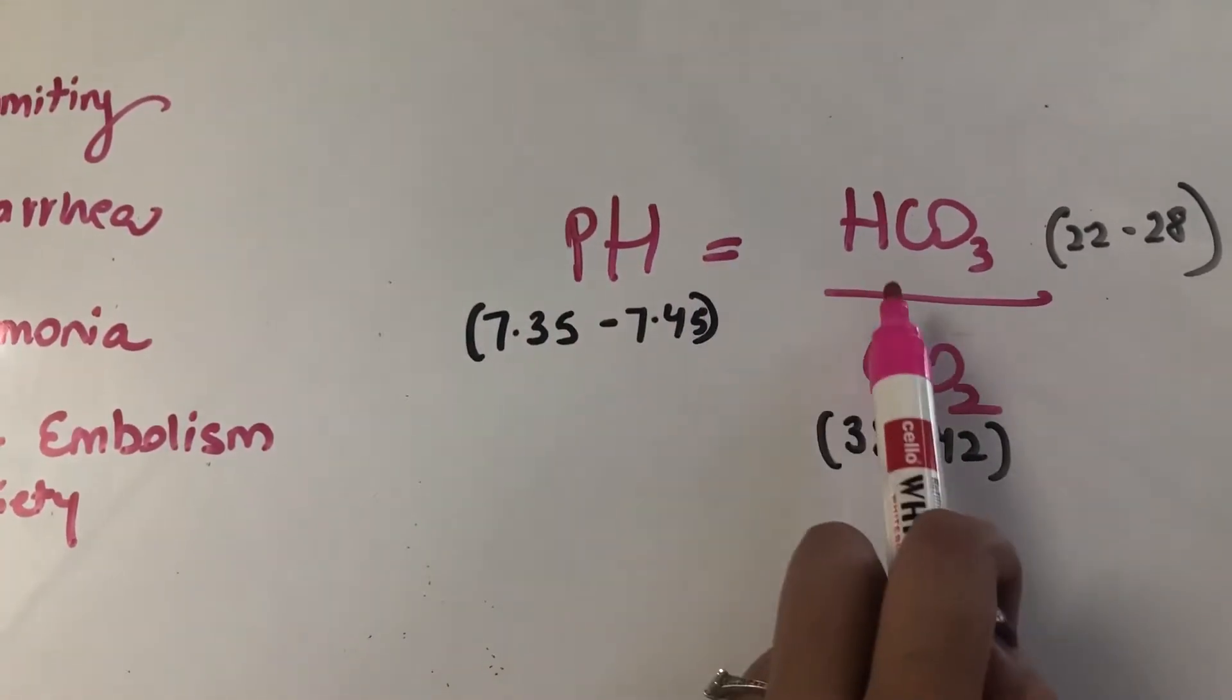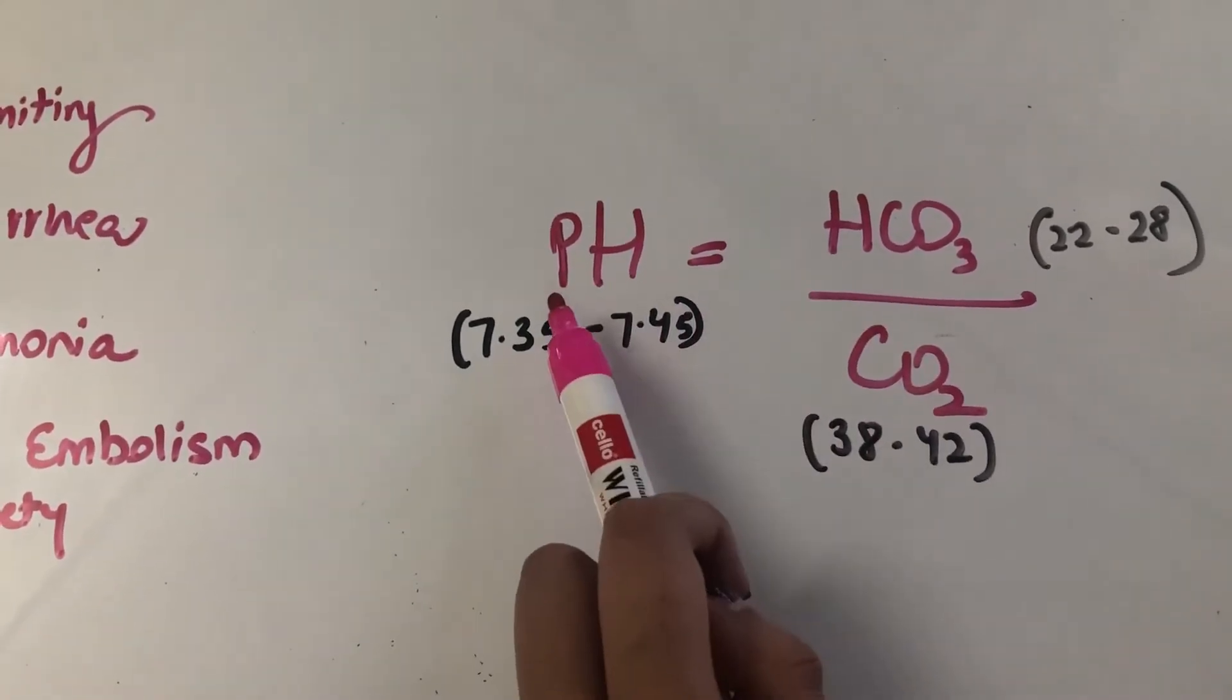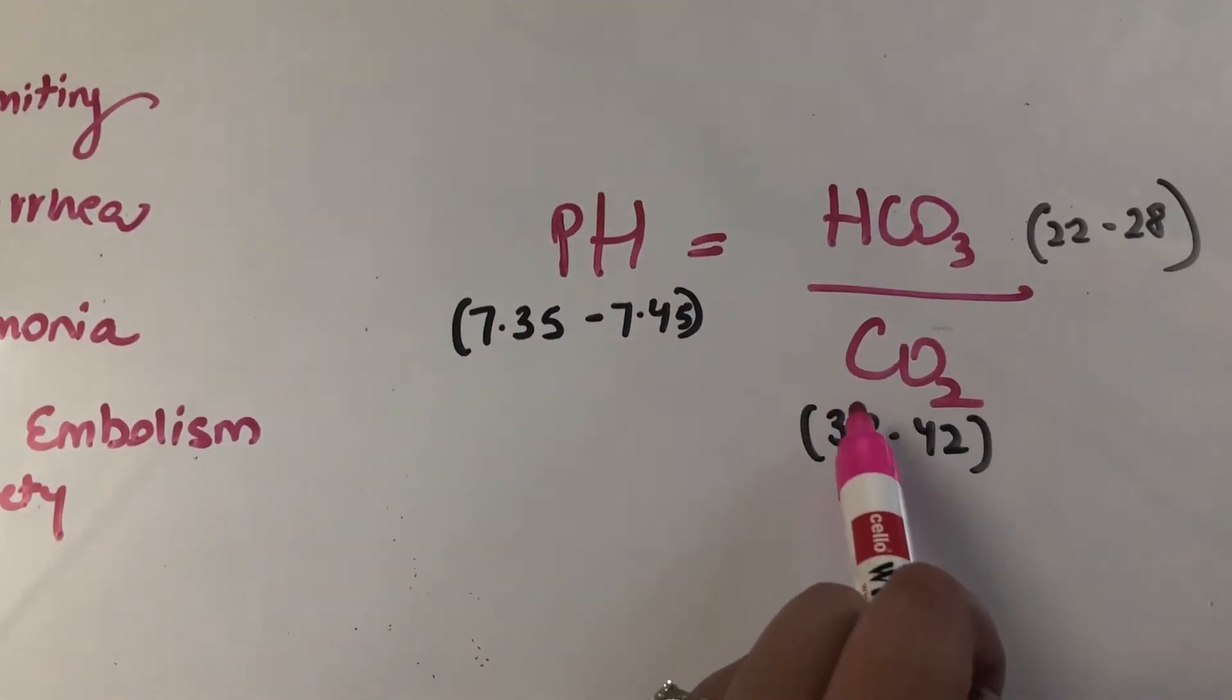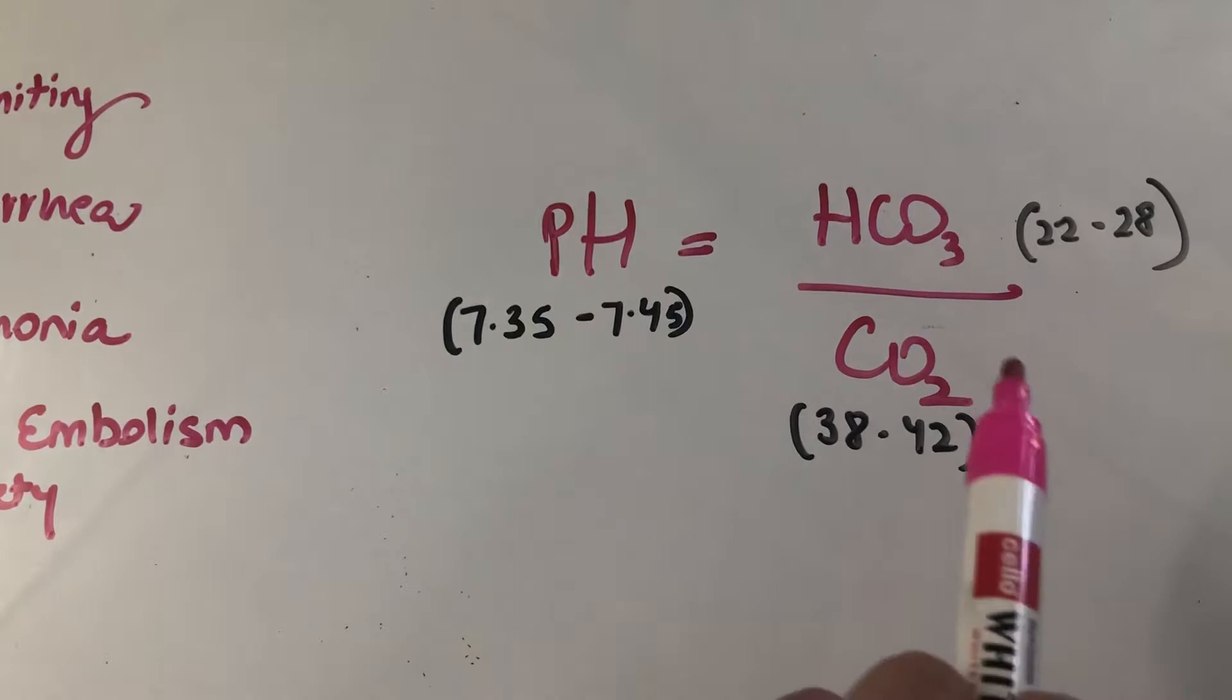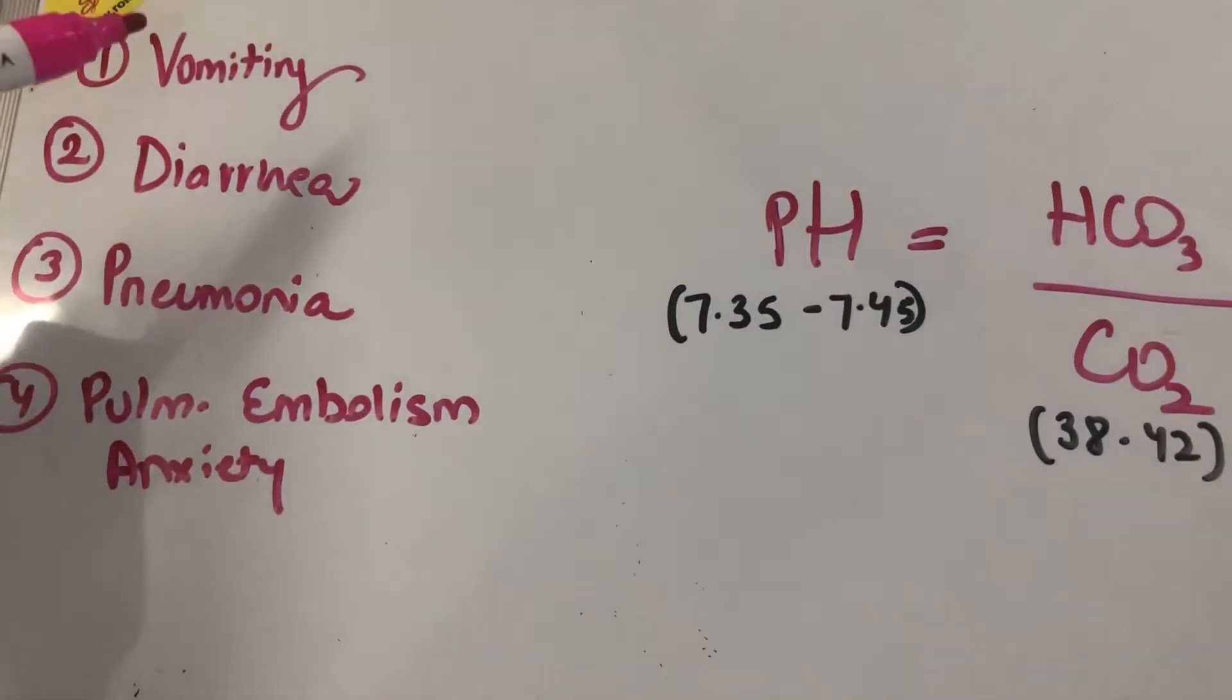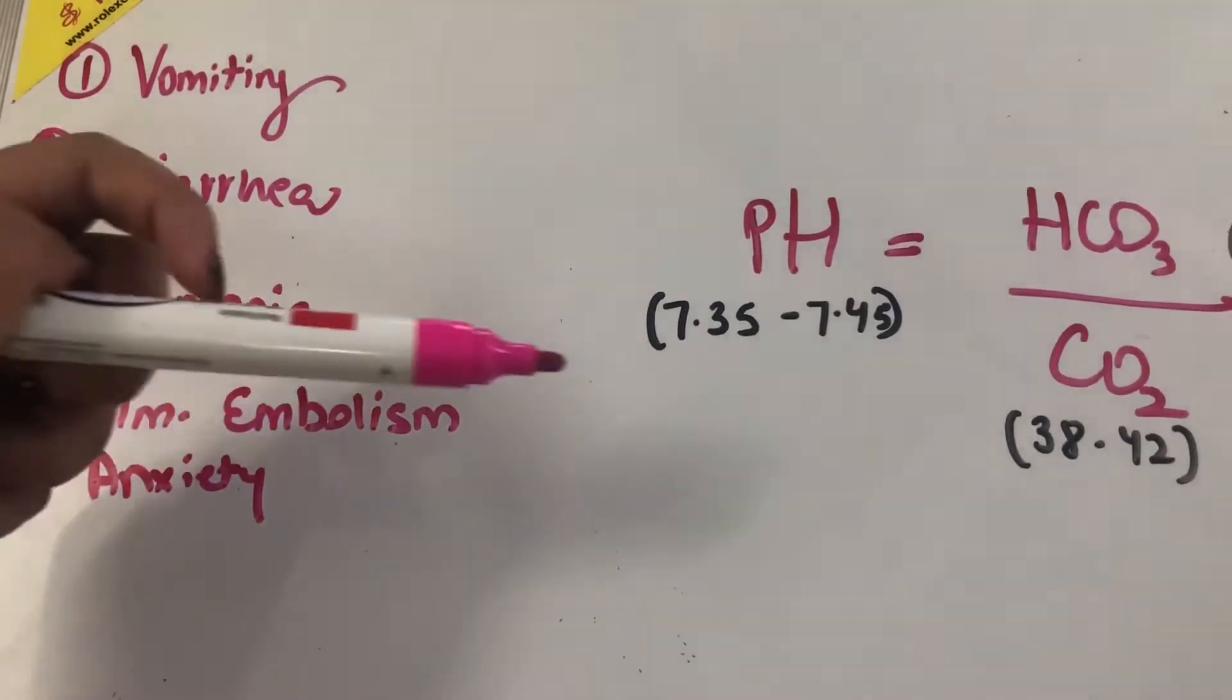So if the pH, if the HCO3 goes up, then the pH goes up. If the CO2 goes up, then the pH comes down, because they are inverse. Okay, great. So I have a few conditions listed here, and we will apply them to this equation.